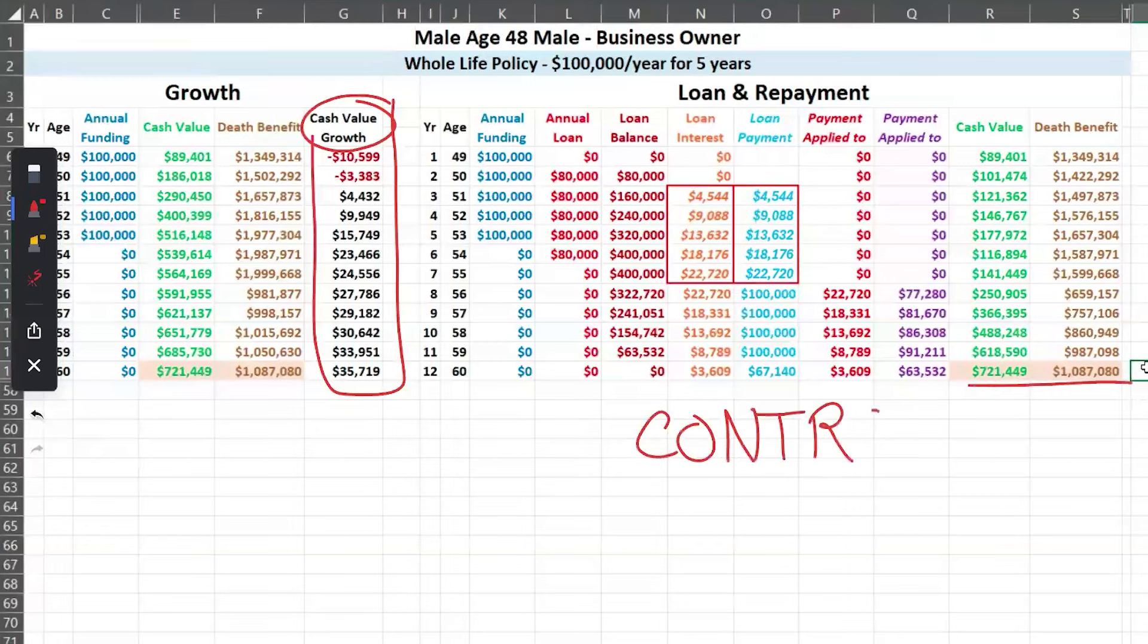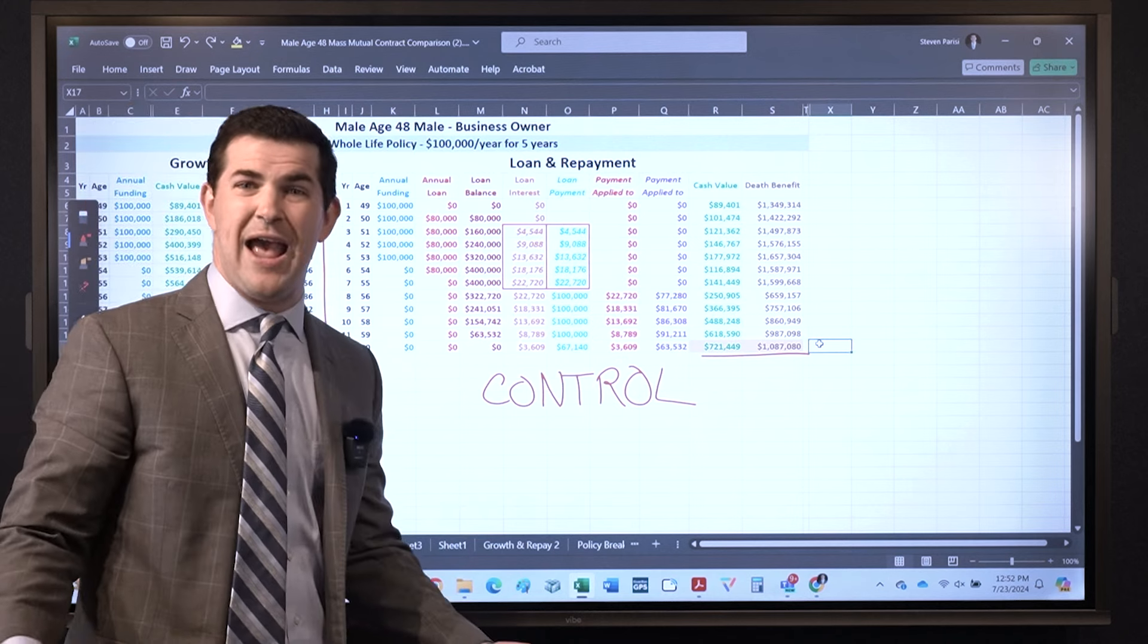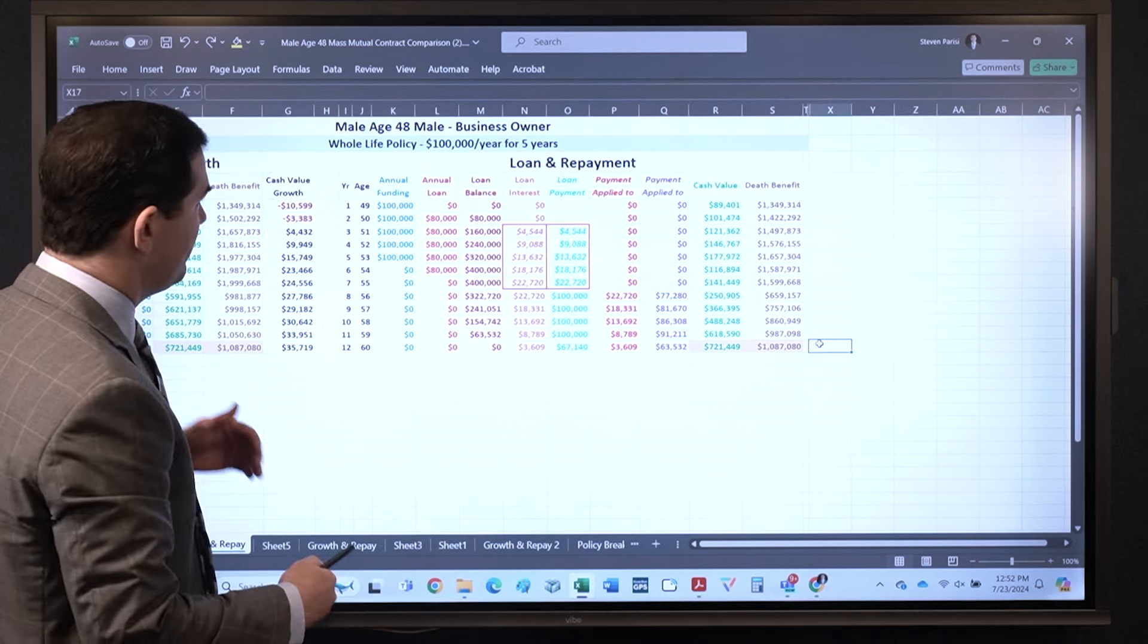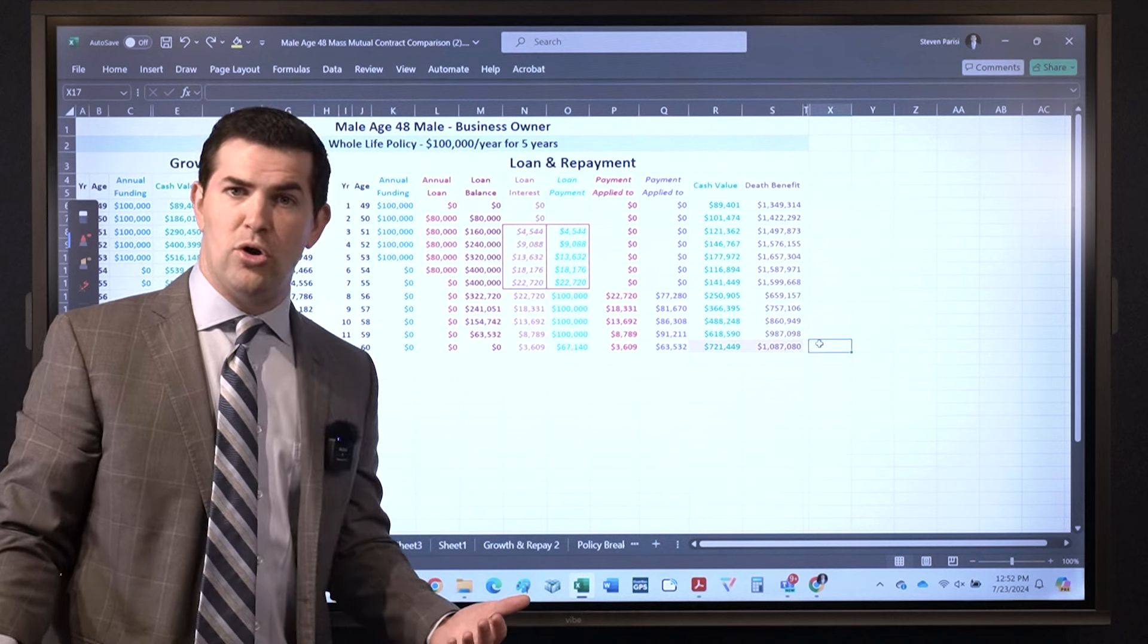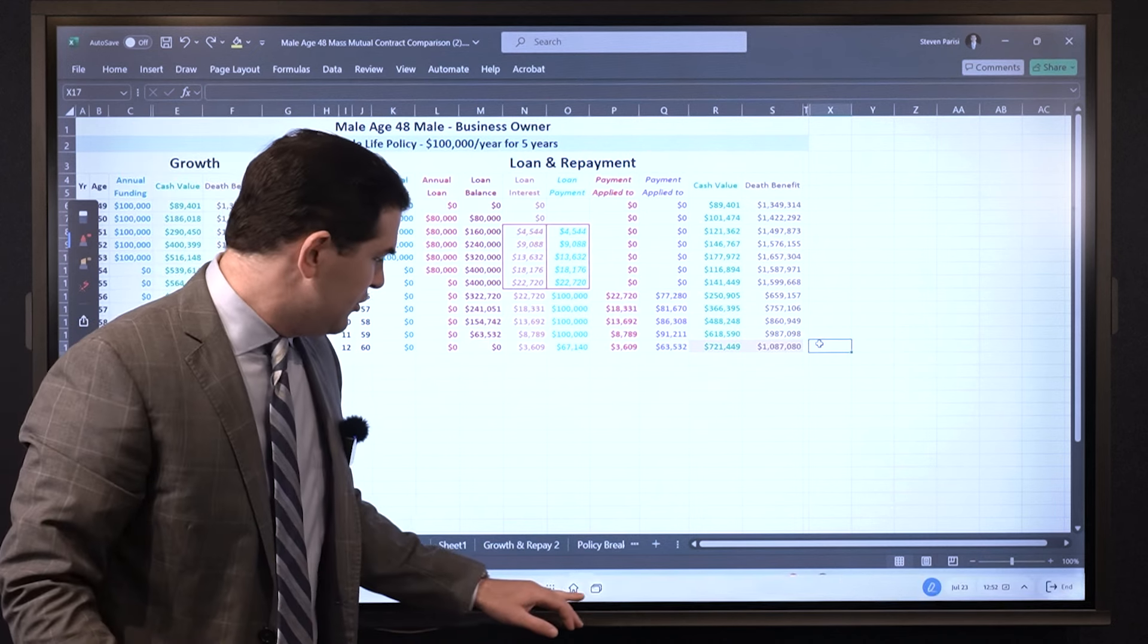And here's what business owners like the most: you have complete control of how and when you pay those loans. You don't even have to - in retirement people typically don't - but when I'm using it as my own bank or personal line of credit, it usually makes sense to do so.